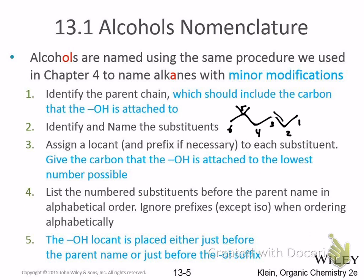If there's both an alkene and an alkyne in a tie, the alkene wins. For example, if you have both, the alkene would get number one because it has priority at a tie. And there is a place in your book, maybe even the inside cover, where they list the priorities. The nice thing is that's a reference page, and as you get to the end of the book, you'll look at the inside cover and it'll all make sense.